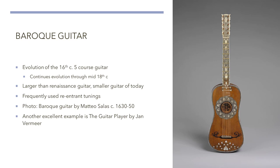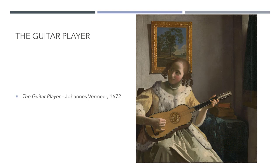Re-entrant tunings, however, have strings that are out of sequence. For example, you'll start with the lowest string, and the next string would be higher, and the next string would be higher, then the next string would be lower, and the next one would be higher. It's very unusual in modern tunings to see this type of tuning on a guitar. The guitar shown on the slide is a Baroque guitar from roughly 1640.